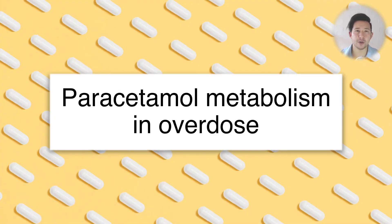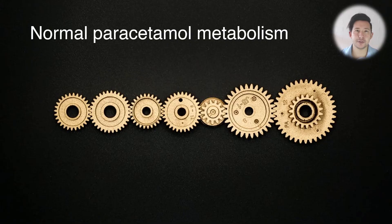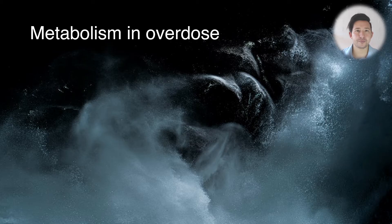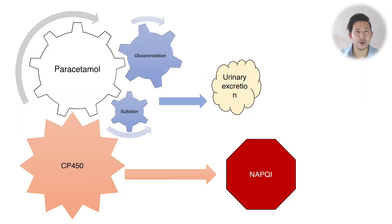In this first video about paracetamol, we're going to talk about paracetamol metabolism in the context of overdose. Normal paracetamol metabolism occurs in the liver by two main processes: glucuronidation, which is mostly the process involved, and sulfation, which accounts for about a third of the metabolism. The metabolites are then excreted in the urine. In an overdose, we also get processing by cytochrome P450 enzymes.